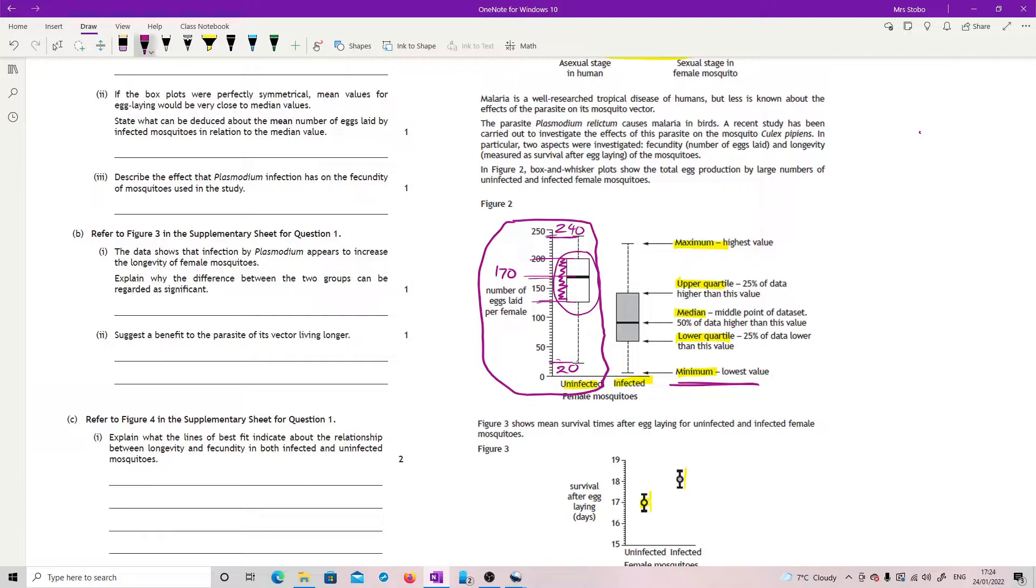Or you could say that 50 percent are between these points here, between your upper quartile end and your lower quartile end. I don't think that's too bad. They're literally asking you to read information off and they're giving you the definitions over here to help you.